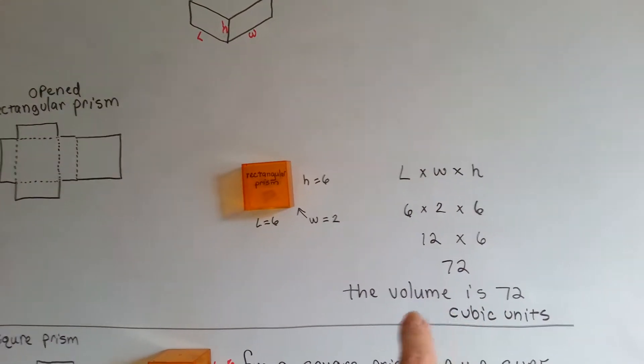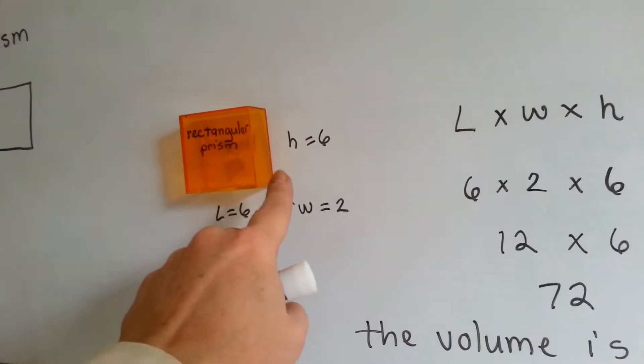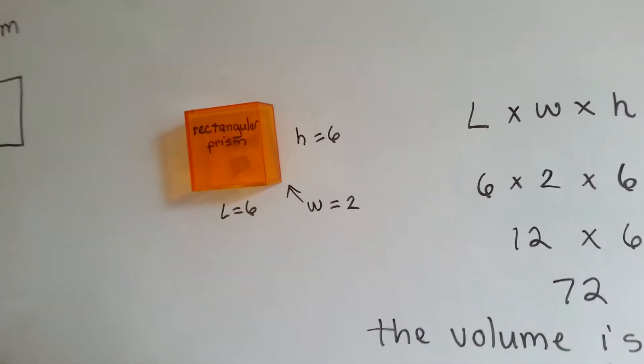The volume would be 72 cubic units. If we had these little cubes, we could fit 72 of them in there.